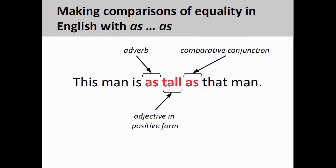Now that we have looked at comparisons of inequality, increasing degree, and correlative comparisons, let's conclude with a look at comparisons of equality. Whereas comparisons of inequality drew comparisons between two dissimilar objects, comparisons of equality are used to compare things that are of similar or nearly the same proportion. For example, a sentence comparing two different men of the same height: in this structure, the first 'as' functions as an adverb modifying the following adjective in the positive form, and the second 'as' functions as a conjunction introducing the comparative clause. The verb in this clause can be omitted through comparative deletion.